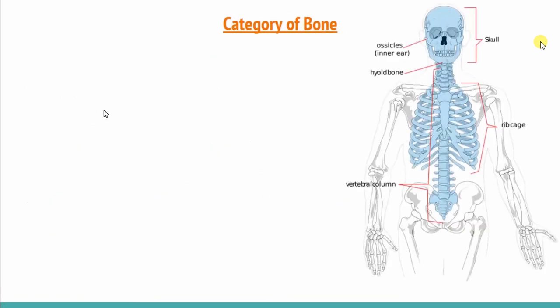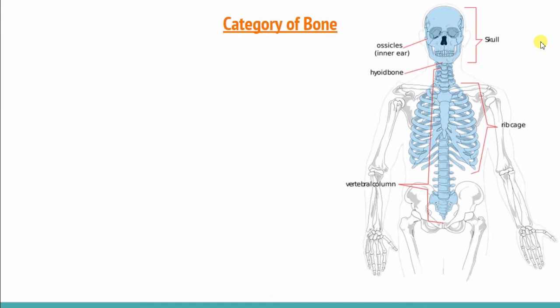We will start with bones. We see the category of bones. We can divide the bones a lot, but we are seeing the first division, where we have divided the bones by position. We have divided the bones into two groups.